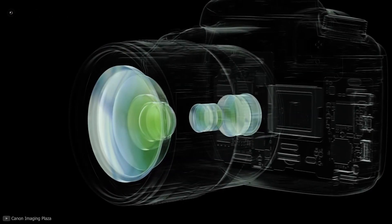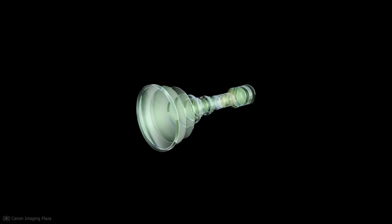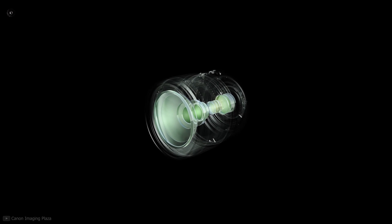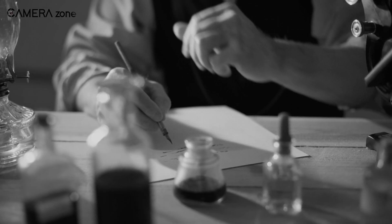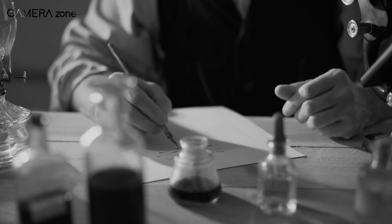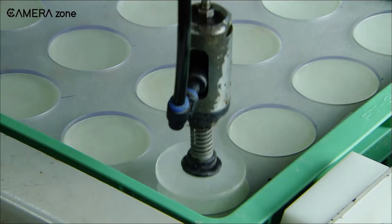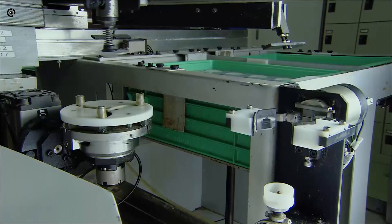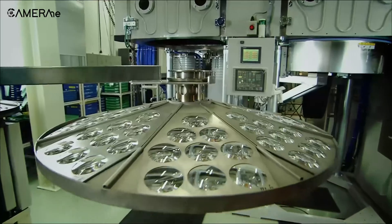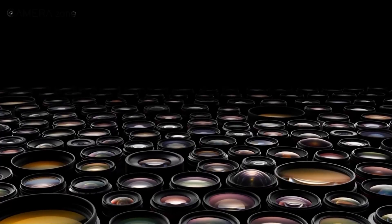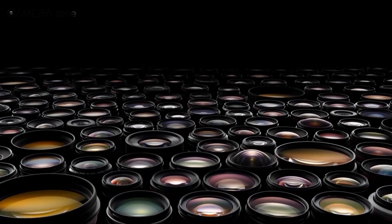Lenses today also include advanced features like variable aperture, stabilization, aberration control, and more. Lenses have a long history, and many people have contributed to their improvement to bring them where they stand today. The development process of lenses hasn't ended yet, as more and more breakthroughs continue to emerge. So, what changes would you like to see in future lenses? Let us know in the comment section.